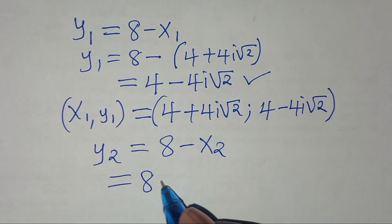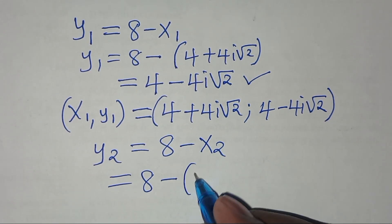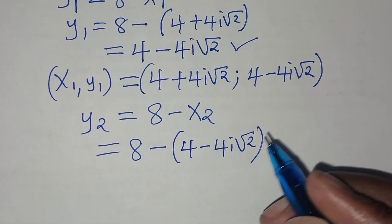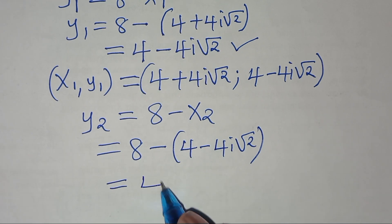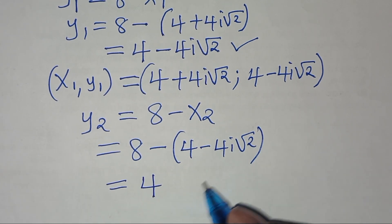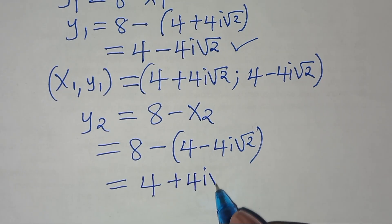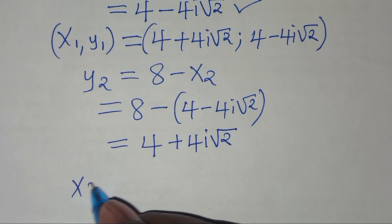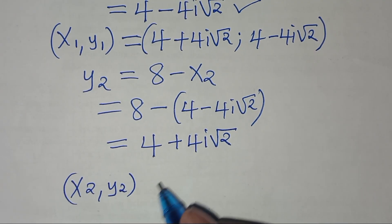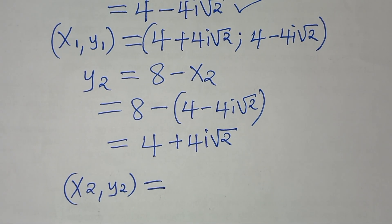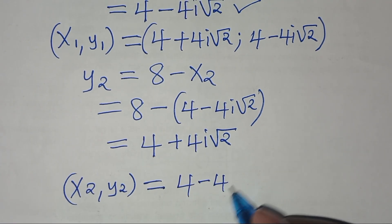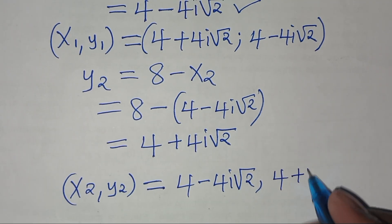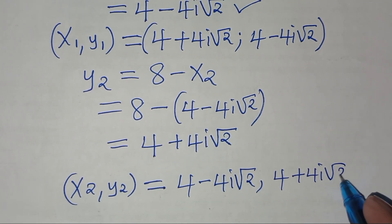For y2: y2 equals 8 minus x2, and x2 equals 4 minus 4i root 2. So y2 equals 8 minus (4 minus 4i root 2) equals 4 plus 4i root 2. Therefore the second solution pair is x2, y2 equals (4 minus 4i root 2, 4 plus 4i root 2).